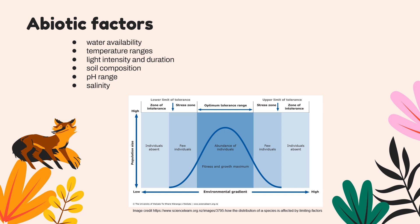These abiotic factors also limit the distribution of species across the planet. We've talked about water availability related to precipitation, and temperature ranges. We can add light intensity and duration — how long each day or season organisms have access to light. Soil composition is also super important for terrestrial biomes. And then pH and salinity — salinity is saltiness — which are super important for aquatic biomes.